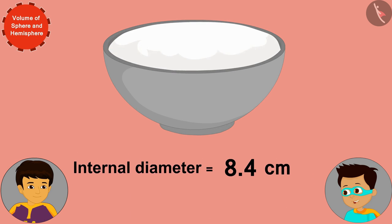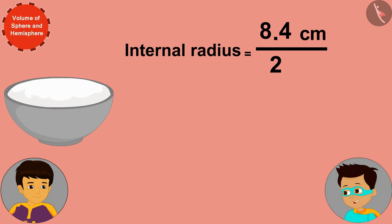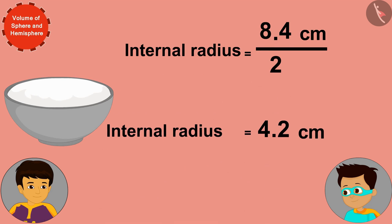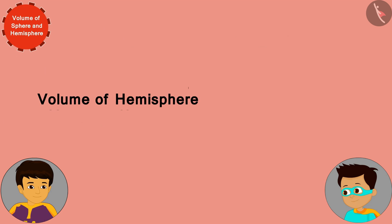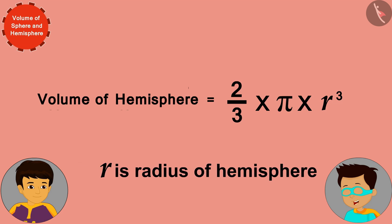The internal diameter of the bowl is 8.4 cm. This means that its internal radius is half its internal diameter, or 4.2 cm. The formula for the volume of a hemisphere is equal to two-thirds of pi times r cubed, where r is the radius of the hemisphere.